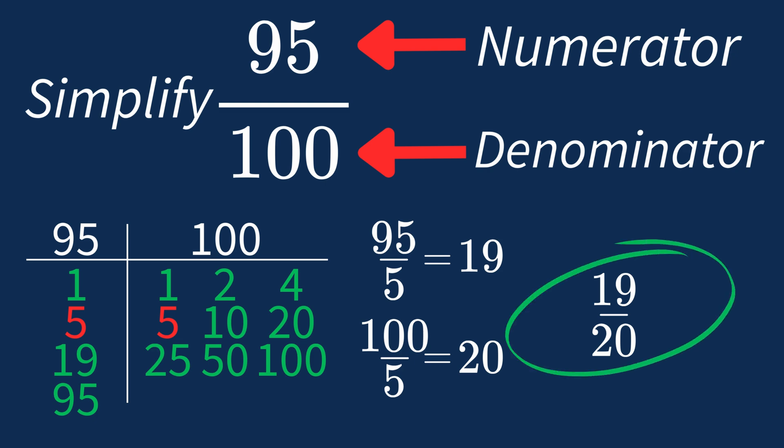And we know that 19 over 20 is in its simplest form, because the only common factor between 19 and 20 is 1. And when 1 is the largest common factor, we know our fraction is already in its simplest form.